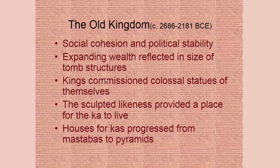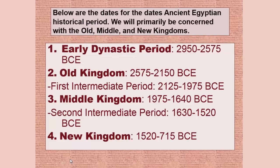These huge sculpted likenesses give the kings a place for their Ka to live forever. This is the time when we see the houses for the Ka — it progresses from what's called a mastaba to a pyramid.